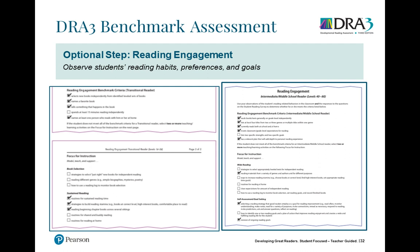Reading engagement used to be step one, but is now optional at the end. This is where you learn about students' reading behaviors — if they read at home, who they read with, what their favorite book is. It's especially useful at the beginning of the school year. For students who say they don't like reading, this information can help you go to the library and find a book at their reading level on a topic they enjoy — like tigers, for example.